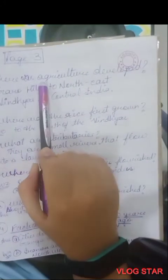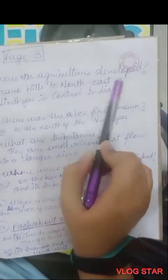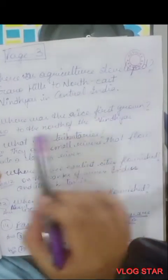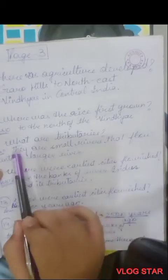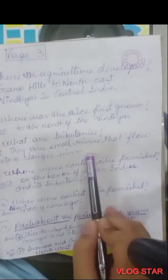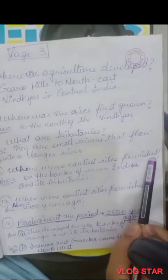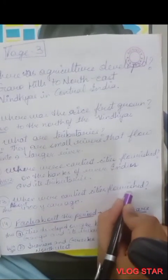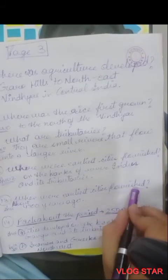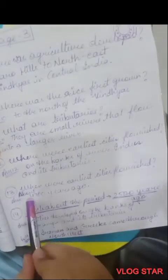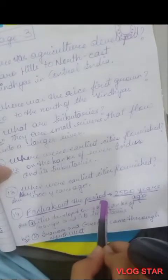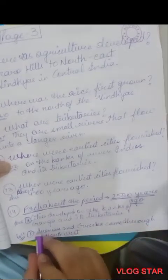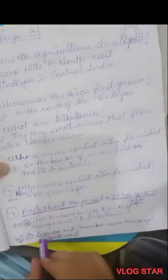Direction of Garrow Hills is northeast; direction of Vindhyas is central India. Where was agriculture also developed? Garrow Hills to the northeast and Vindhyas in central India. Where was rice first grown? To the north of the Vindhyas. What are tributaries? They are small rivers that flow into a larger river. Where did earlier cities flourish? On the banks of river Indus and its tributaries, about 4700 years ago.